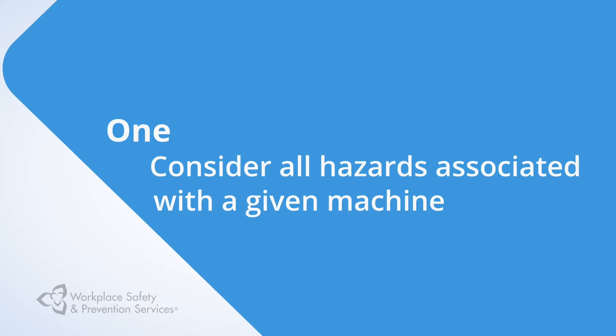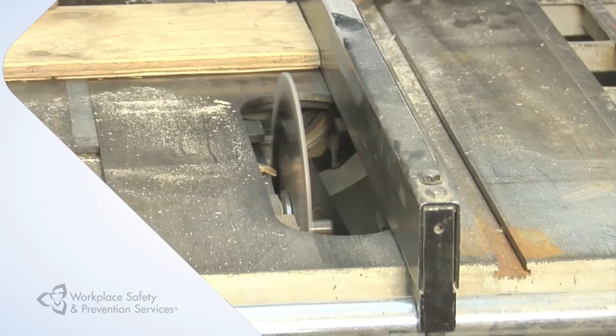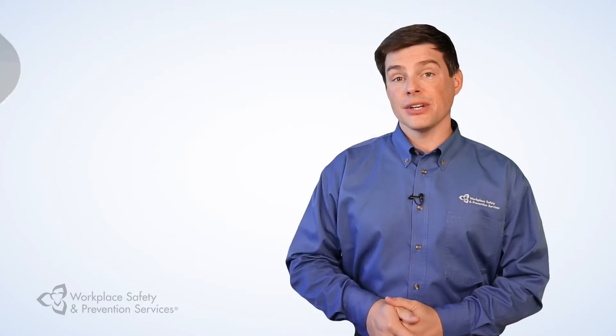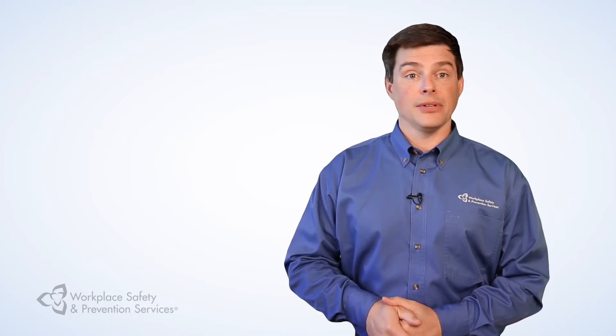1. Consider all hazards associated with a given machine. For example, many people would agree that using a table saw could result in a serious cut or amputation. But there are other associated hazards, like splinters from handling the wood, hearing loss due to noise, slipping on sawdust, kickback if the material catches the blade, and airborne dust getting in the eyes.